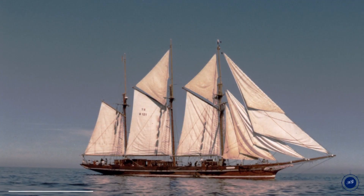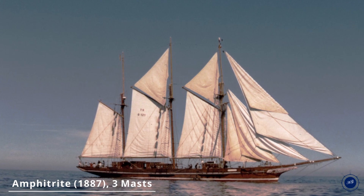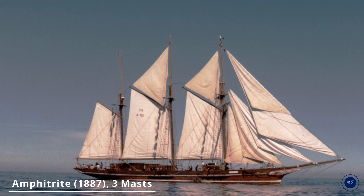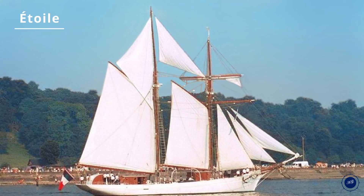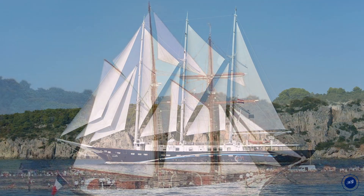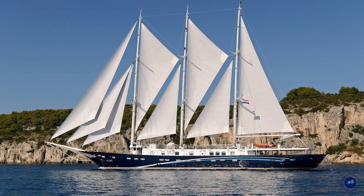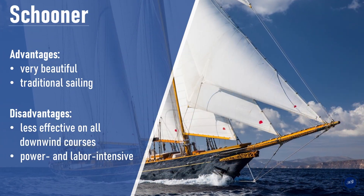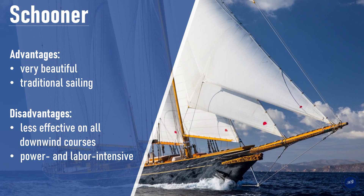Originally, schooners had only two masts; later, schooners with three and more masts were built. Especially in the United States in the late 19th and early 20th centuries, schooners with five or more masts were built. Here we see a French schooner with topsail schooner rigging — this rigging allows the ships to sail very close to the wind. Schooners are very beautiful, and many traditional ships are schooners. Regarding sailing performance, schooners are the least effective on all downwind courses. The operation of the numerous sails is very power- and labor-intensive and is now realized by hydraulic and electric winches.